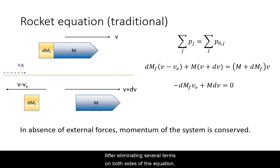After eliminating several terms on both sides of the equation, we only have two terms left. One for the rocket and one for the fuel expelled. At this point, we need to make a substitution knowing that the differential mass of fuel expelled is also the differential mass lost by the rocket.